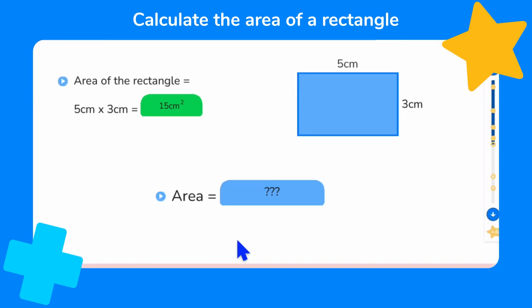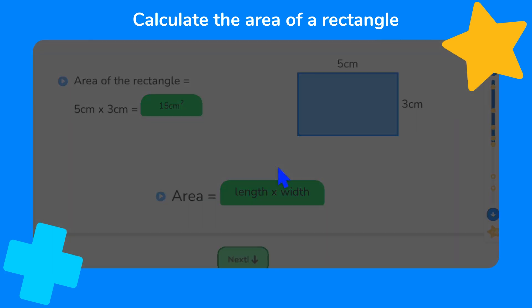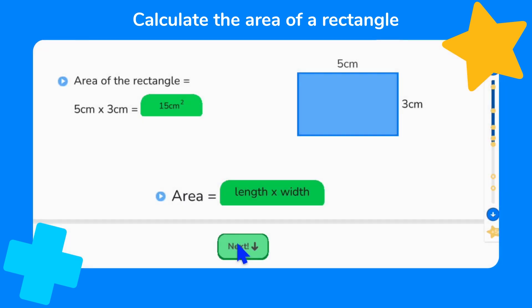For the last part of the discover, we need to complete the equation for area. Can you remember how to calculate area? Is it length add width, length subtract width or length multiplied by width? That's right, area equals length times width. Great job, that's another doodle star.